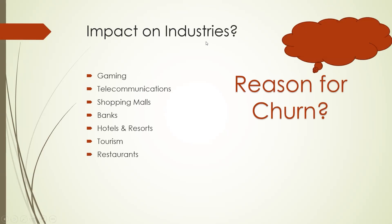The impacts are seen across various industries — gaming, telecommunications, shopping malls, banks. Shopping malls are highly impacted because of online shopping platforms. Banks see churn when people move from one bank to another offering better rates of interest on FDs and other schemes. Hotels, restaurants, and tourism are also affected. What could be the reasons for churn? Better services at low cost, more offers, sales and discounts — these are the key drivers.